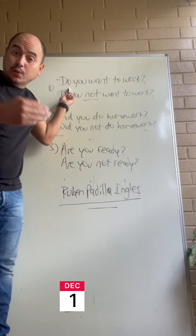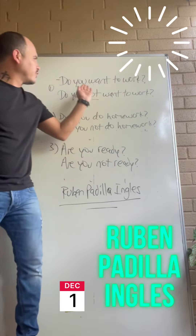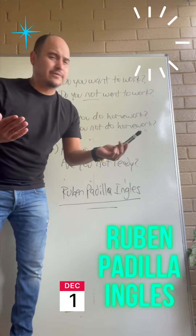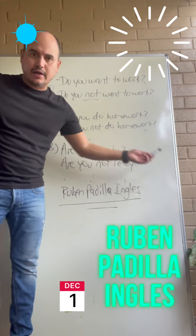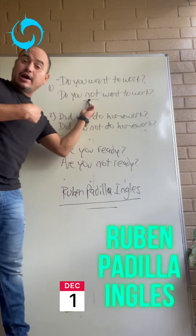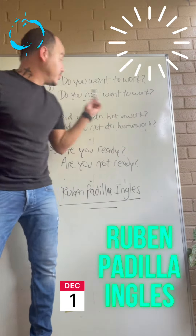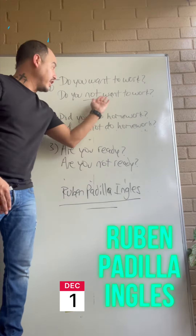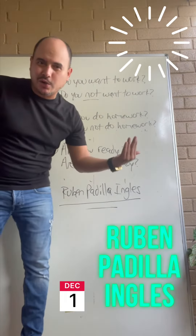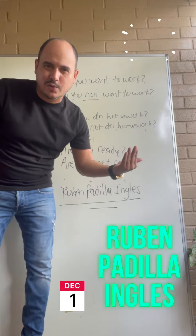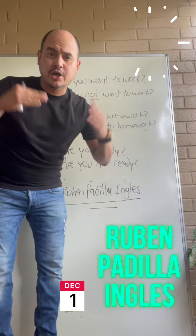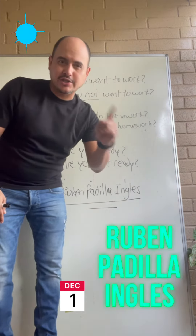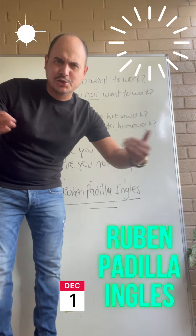Do you want to work? Ahora, cómo preguntarías a alguien 'no quieres trabajar'? Check this out: do you not want to work? Todo lo que tienes que hacer — okay, antes del verbo poner 'not': do you not want to work. No quieres trabajar. Cómo preguntas a alguien 'entiendes'? Do you understand? Ahora, cómo preguntarías 'no entiendes'? Do you not understand?